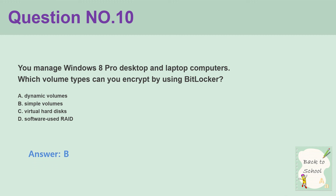Question number 10. You manage Windows 8 Pro desktop and laptop computers. Which volume types can you encrypt by using BitLocker? A. Dynamic volumes. B. Simple volumes. C. Virtual hard disks. D. Software RAID. Answer: B.